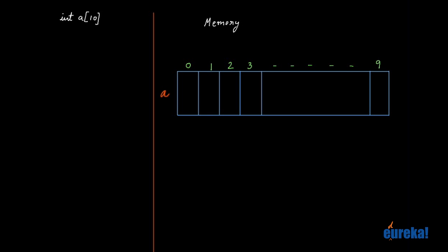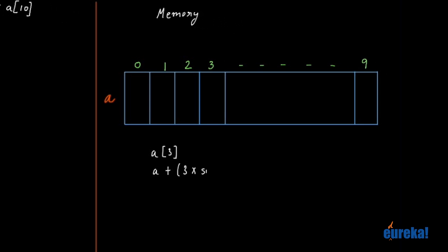And this is A. As we had mentioned earlier, the variable A alone without any index is the starting address. Using A, we can access any block we want. So if I want to access the fourth one, which is A[3], what internally happens is it computes A plus 3 times sizeof(int). Since sizeof(int) is 4, three times four is 12, so it adds 12 bytes to A.